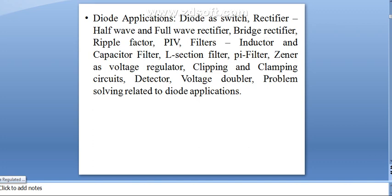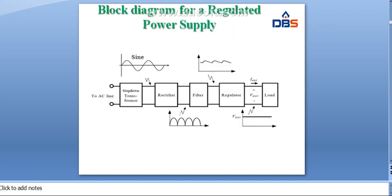Today we will discuss about rectifiers. So, what is a rectifier? Here is a block diagram of a regulated power supply. It consists of a step-down transformer, rectifier section, filters, and regulators. This system converts AC to DC.